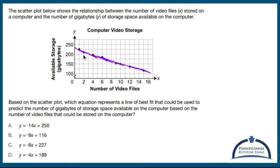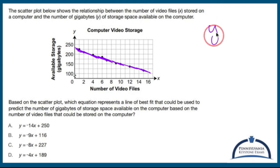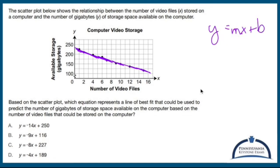Drawing a straight line is really difficult on this computer, but I've got myself a line going through those dots. Now, comparing this to y equals a number x plus whatever — that looks like slope-intercept form: y equals mx plus b.